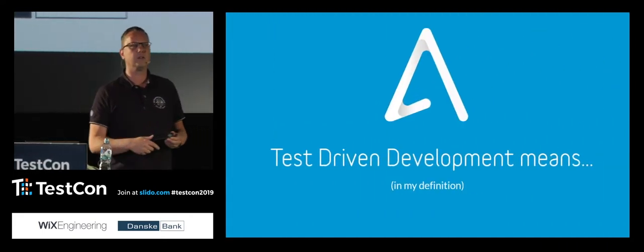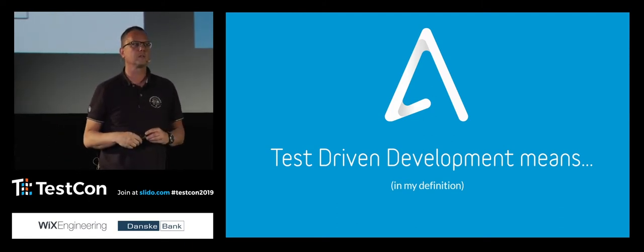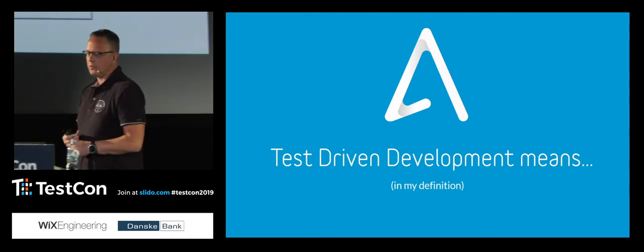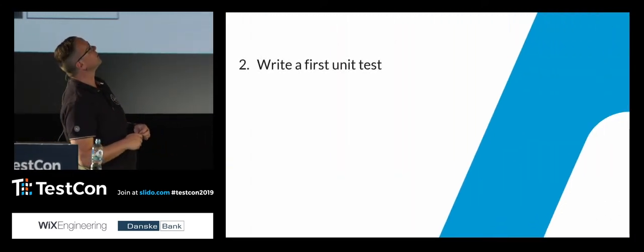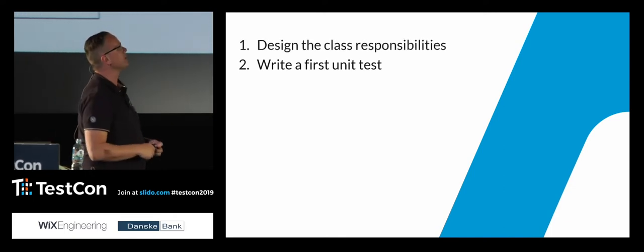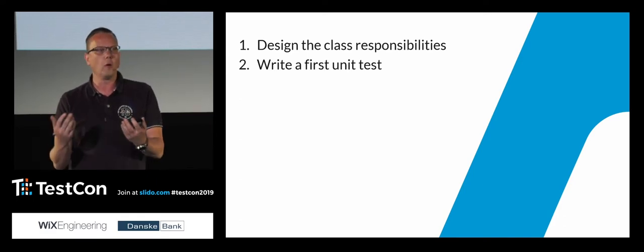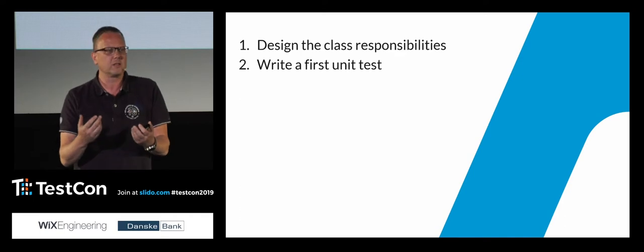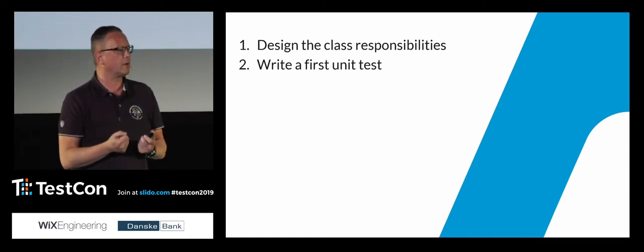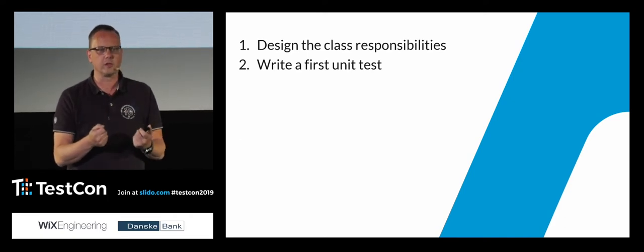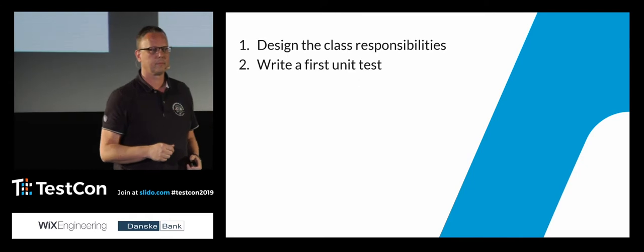Test-driven development. Did anybody join a session this morning about strategic test-driven development? For me, TDD doesn't mean exactly what the book says. It starts with designing the class responsibilities — nobody starts coding without thinking upfront about the different objects or concepts in their system and how they work together. You think about the boundaries and how to decouple certain elements from each other. You apply SOLID. You don't start with a unit test without first thinking about the classes in your design.